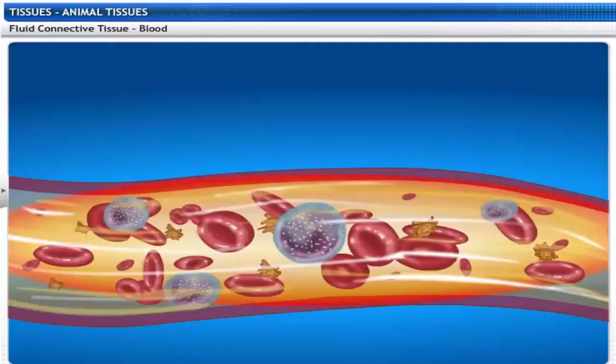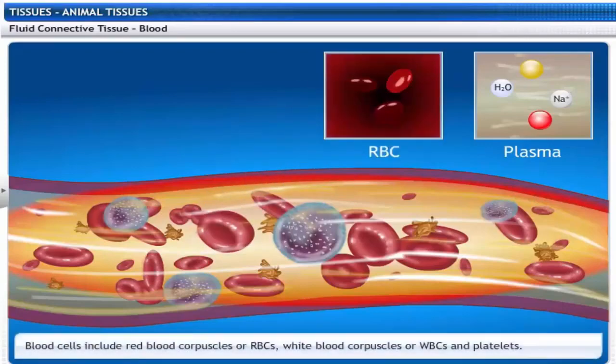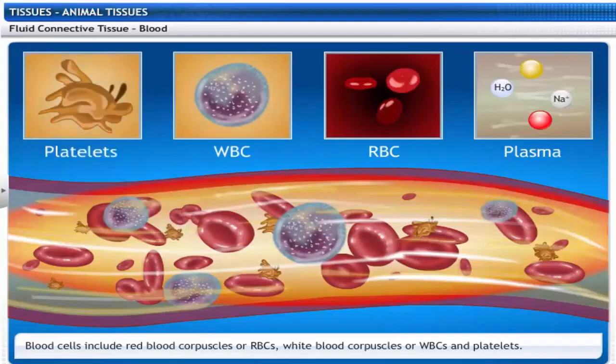Blood is a type of fluid connective tissue. Blood has a straw colored liquid part called plasma which contains water, proteins, salts, and hormones. Blood cells suspended in the plasma include red blood corpuscles or RBCs, white blood corpuscles or WBCs, and platelets.